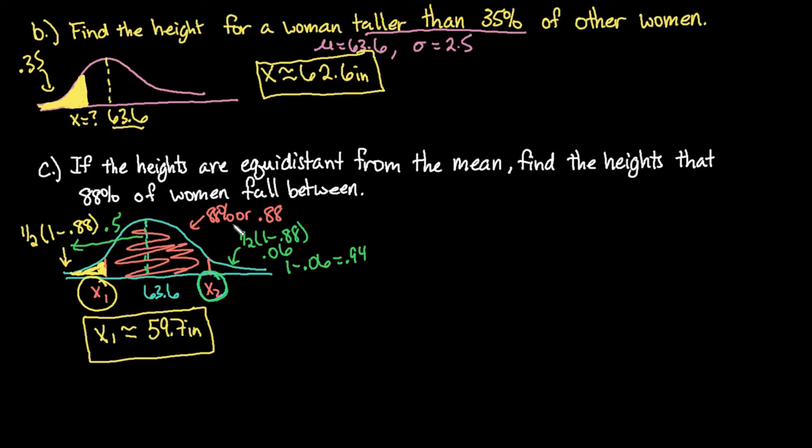And half of the area, half of this .88 falls above. So that would give me .44 to this point here. And so if I add those together, it also gives me .94. Either way, you're going to be finding the area with 94% to the left of it.